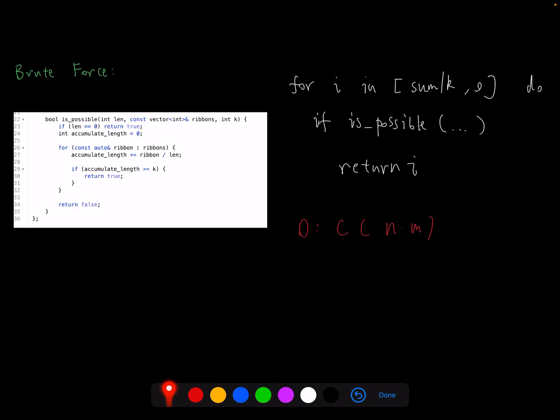So the naive way to solve this problem, of course, we want to search the range from sum divided by k to 0. Sum divided by k is the maximum length we can obtain, and 0 means we are not able to get the parts. We do this in reverse to make sure we can find the first one that qualifies the requirements, which is the maximum one. We have a helper function to check whether i is possible.